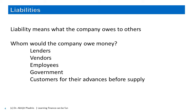Let's now talk about liabilities. It simply means whatever the company owes to others. Who could have a claim on the company? It could be lenders, vendors for bills not yet paid, employees for salary not yet disbursed, the government for unpaid taxes, and customers for advances given where orders have not yet been fulfilled. On the next slide, let's quickly get familiar with the two broad categories.